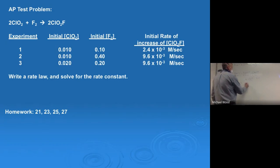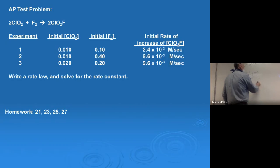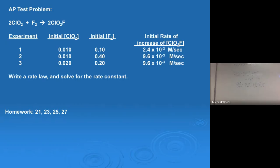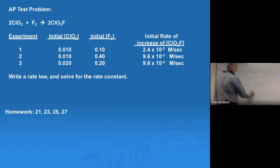This time I have to use F2 because it's not constant. So I've got 9.6 × 10⁻³ over 9.6 × 10⁻³ — and I could have done experiment three versus one but I'd get the same answer. So then I've got 0.020 over 0.010 to the x, and I have to include F2 — so 0.20 over 0.40 to the first. That's the value because I already determined y.